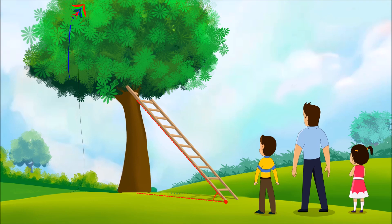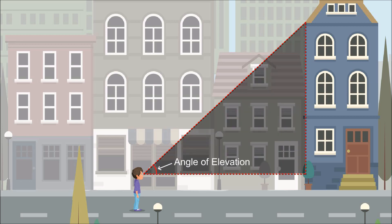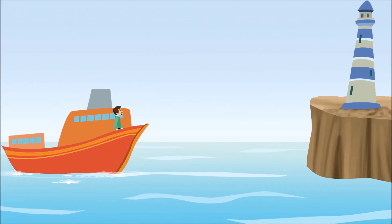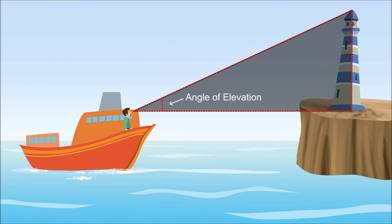Let us see some more situations where there is an angle of elevation. A boy walking on the road looks at the top of a building. The top of the building forms an angle of elevation with the eye of an observer. The line between the observer point and building top is called the line of sight. A ship is sailing on the sea. A man standing on the deck of the ship sees a lighthouse at some distance. The top of the lighthouse makes an angle of elevation at the eye of the man, and the line joining the top of the lighthouse and the observer's eye is called the line of sight.